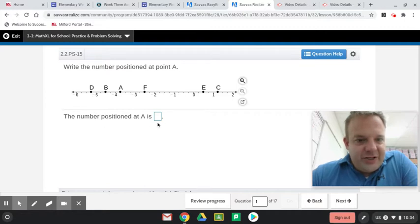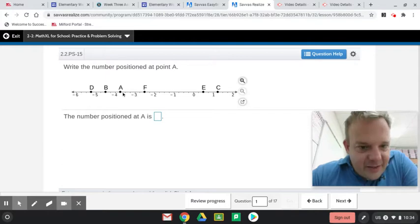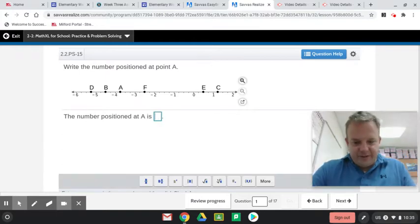Here we go. The number positioned at A is between negative 3 and negative 4. These are rational numbers because rational numbers can be put in fraction form. So this is negative 1-4, 2-4, 3-4. So negative 3 and 3-4.